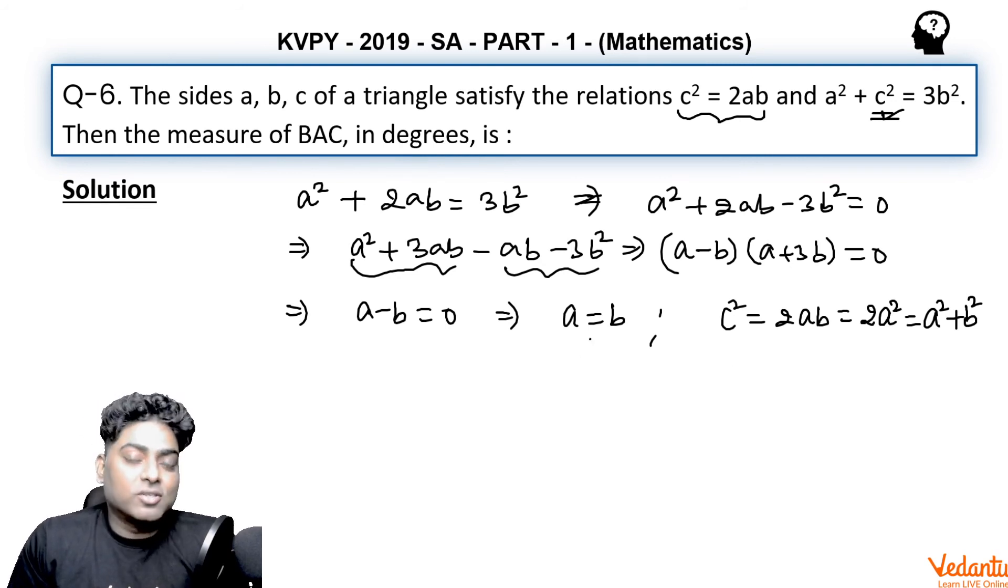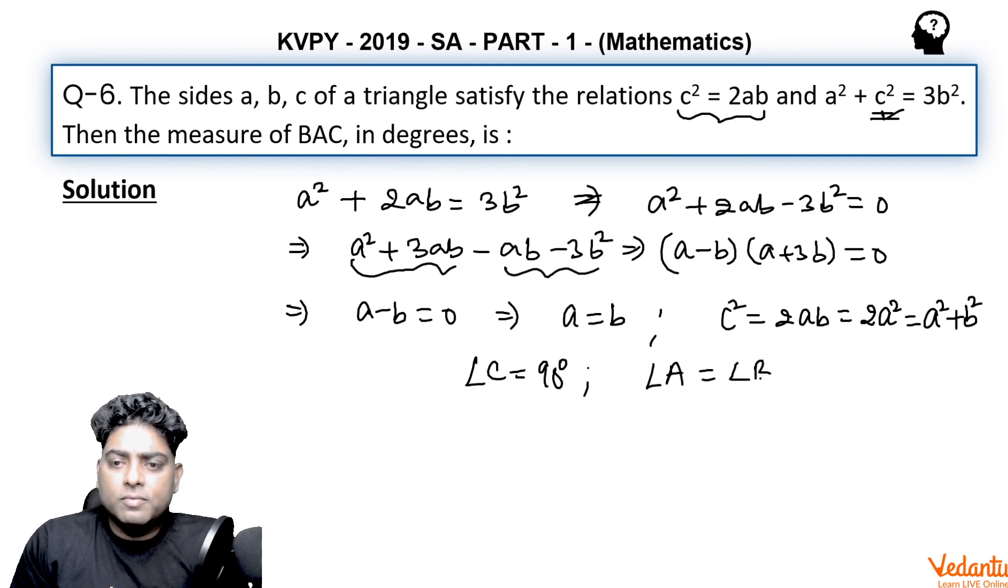And right-angled isosceles, in fact, because a equals b. So in a right-angled isosceles triangle, what are the measures of angles? Angle C would be 90 degrees, and angles A and B would be 45 degrees.